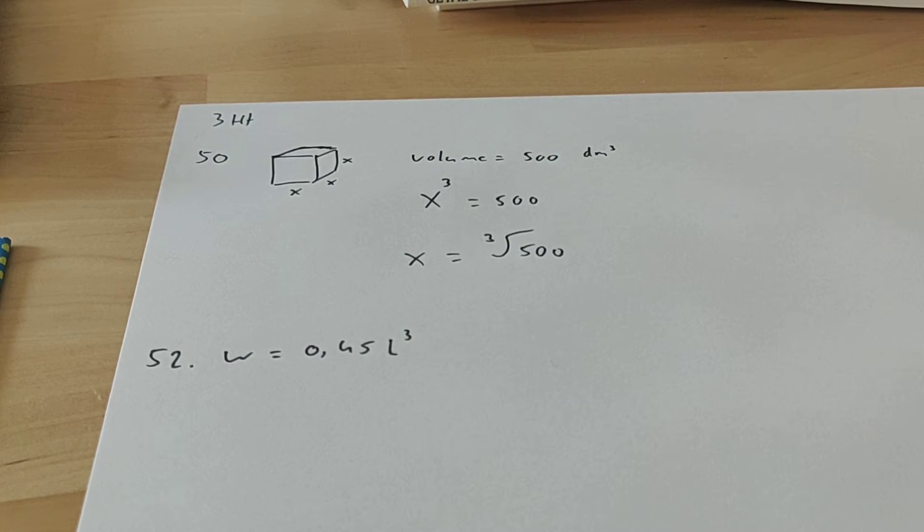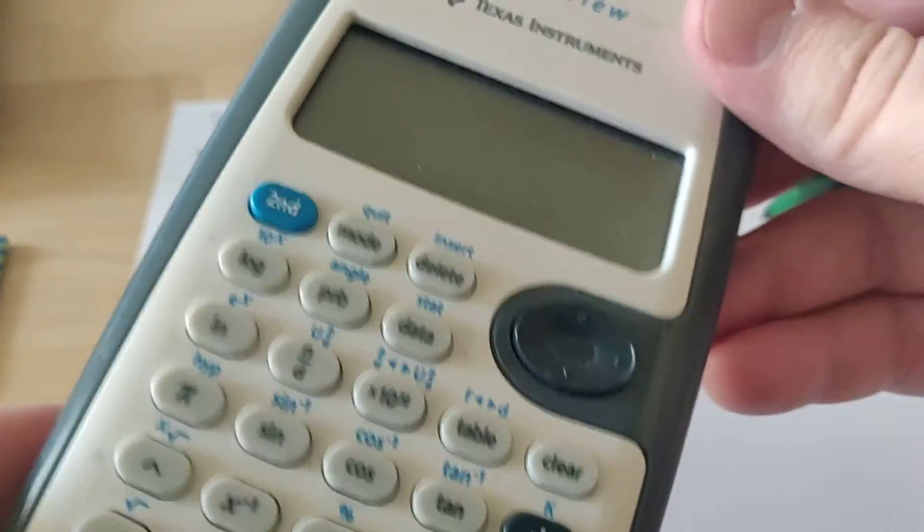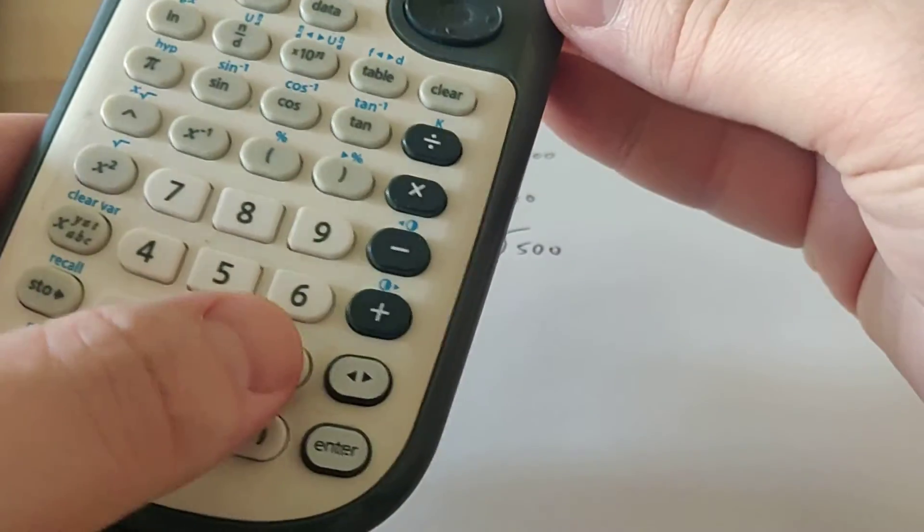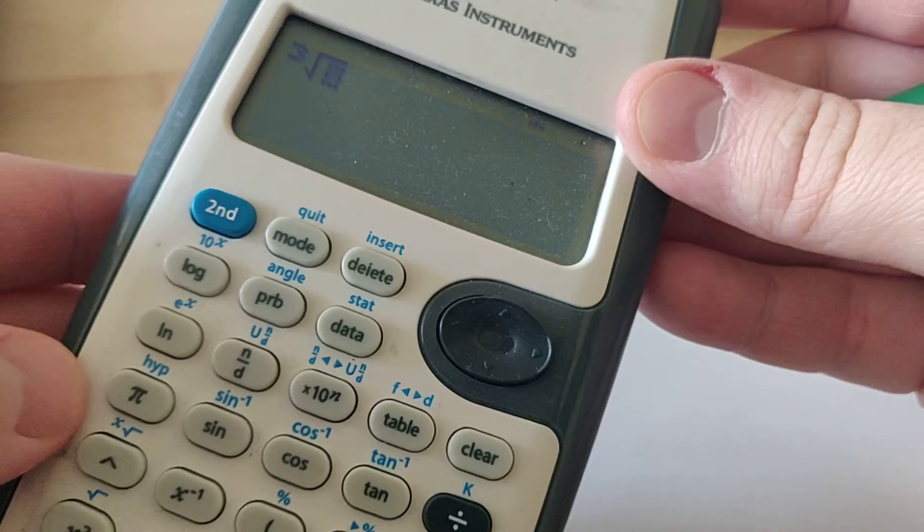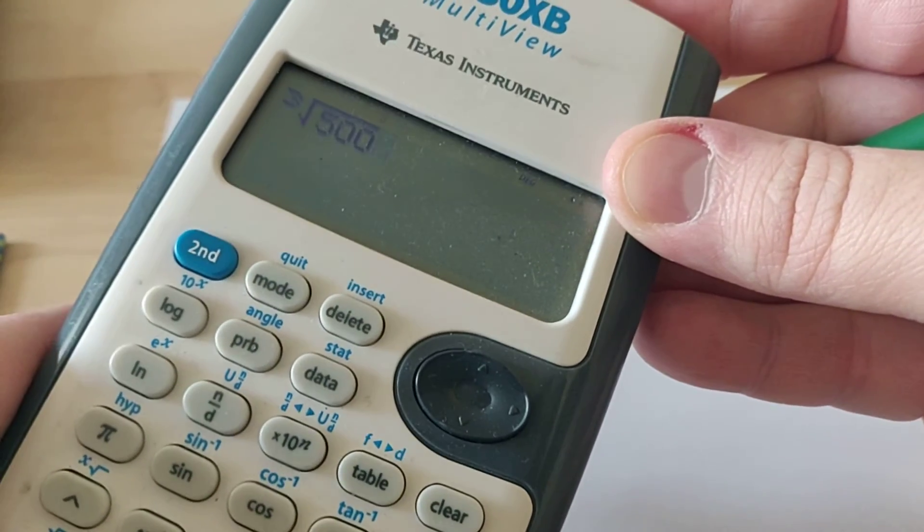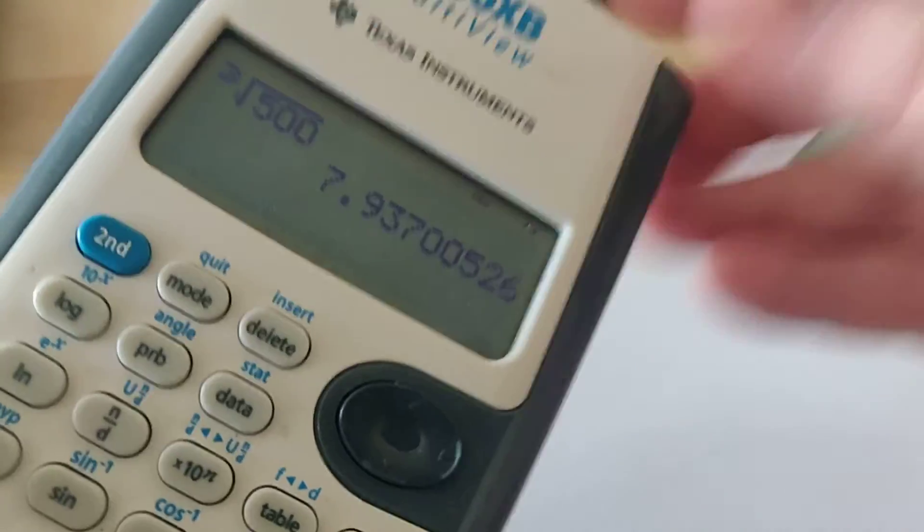So using your calculator, here I have one. First you turn it on, and then I delete this. First you press the 3, because then it says 3 there. Then you press 2nd and then this button, and then you get a third power root of 500. So that is 7.93.